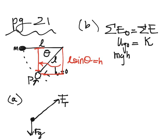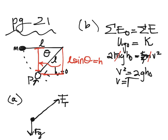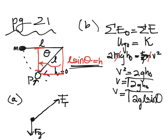So we have MGH naught is equal to one half M V squared. Our M's go away. We're solving for V, so I'm going to bring the 2 over. And I have V squared is equal to 2GH naught. I go ahead and take a square root. So V is equal to the square root of 2GH naught. And I'm going to put my L sine theta in for H. So V is equal to the square root of 2GL sine theta.